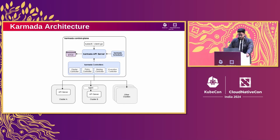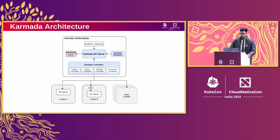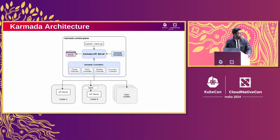The Karmada API server is built on top of the Kubernetes native API, so you can use kubectl, which will directly communicate with the Karmada API server. You can run commands like kubectl apply with a configuration file, or kubectl get deployments to get your workloads, and you can provide a cluster flag to get resources from a specific cluster.